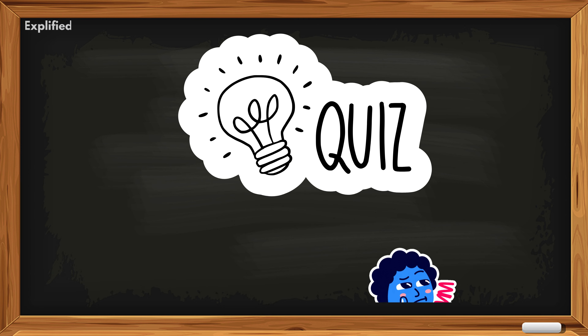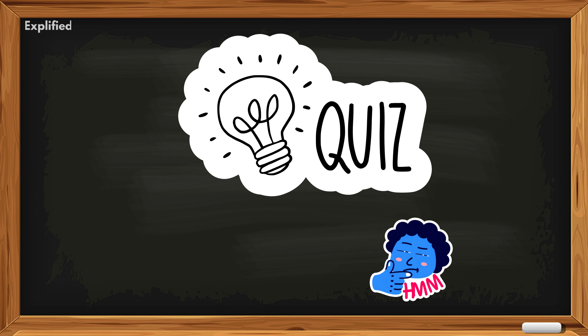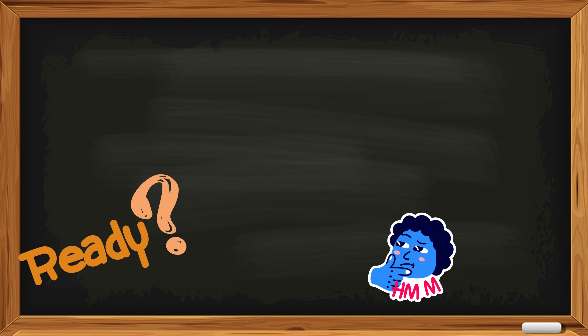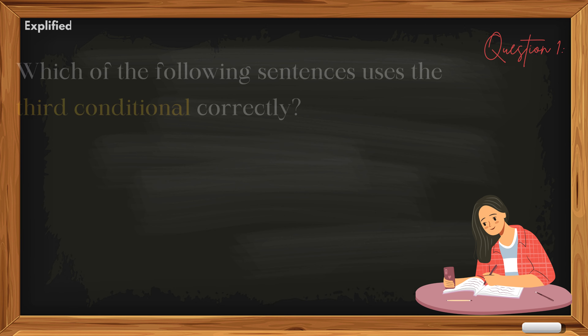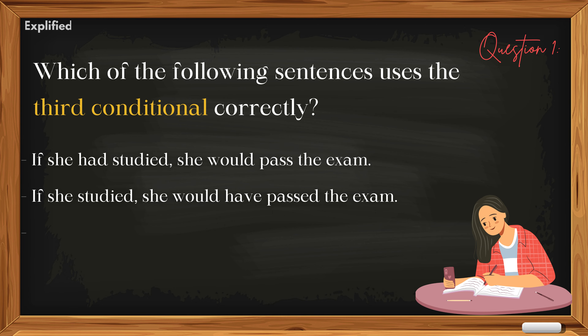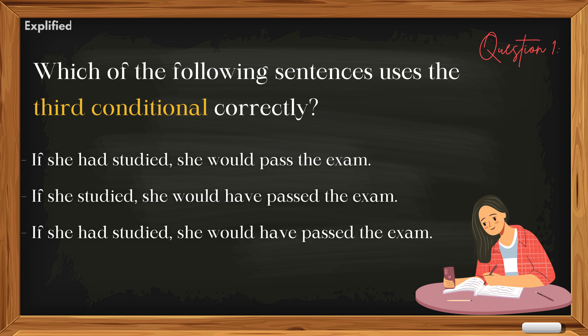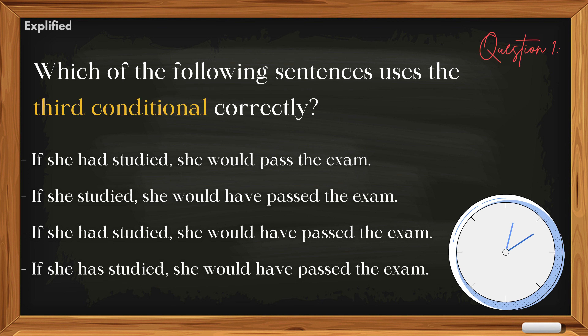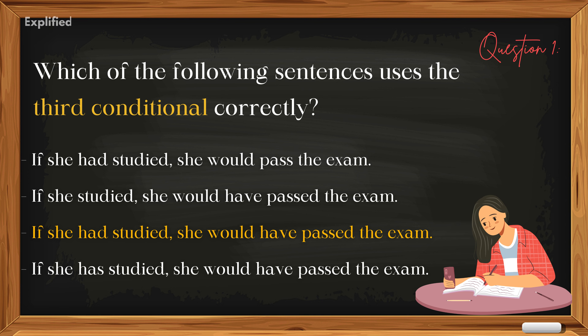It's quiz time! Now let's test your knowledge with some quizzes. Ready? Question 1: Which of the following sentences uses the third conditional correctly? 'If she had studied, she would pass the exam.' Answer: 'If she had studied, she would have passed the exam.'